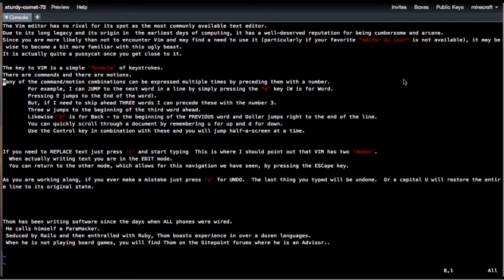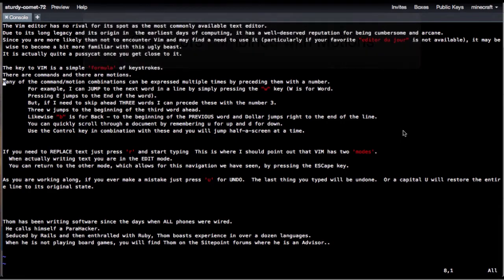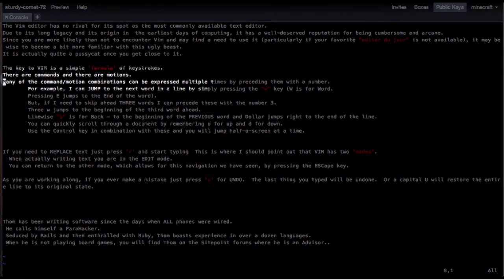The key to Vim is a simple formula of keystrokes. There are operators and there are motions. Many of the operator motion combinations can be implemented multiple times by preceding them with a number. For example, I can jump to the next word in a line by simply pressing the W key. W is for word. Pressing the E jumps to the end of the word. But if I need to skip ahead three words, I can precede this with the number three. So three W jumps to the beginning of the third word ahead.